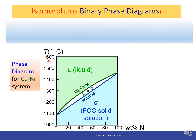This is the phase diagram for the copper-nickel system. The two components are written on the composition axis — one side copper, one side nickel. The horizontal axis shows weight percent of nickel; since we only have two components, the weight percent of copper is 100 minus the weight percent of nickel. The vertical axis shows temperature in degrees Celsius.